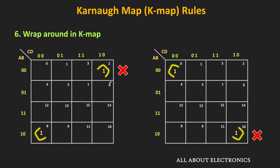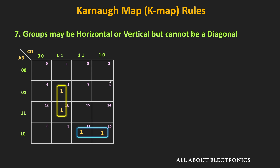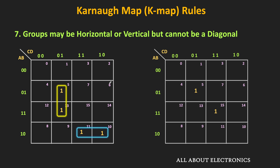The next rule is that during minimization, grouping can be either vertical or horizontal, but diagonal grouping is not allowed. The reason is that cells located diagonally are not adjacent to each other — for example, moving from cell number 5 to 15, more than one variable is changing. That is why those two cells are not adjacent, it is not possible to combine those minterms, and diagonal grouping is not allowed in the K map.